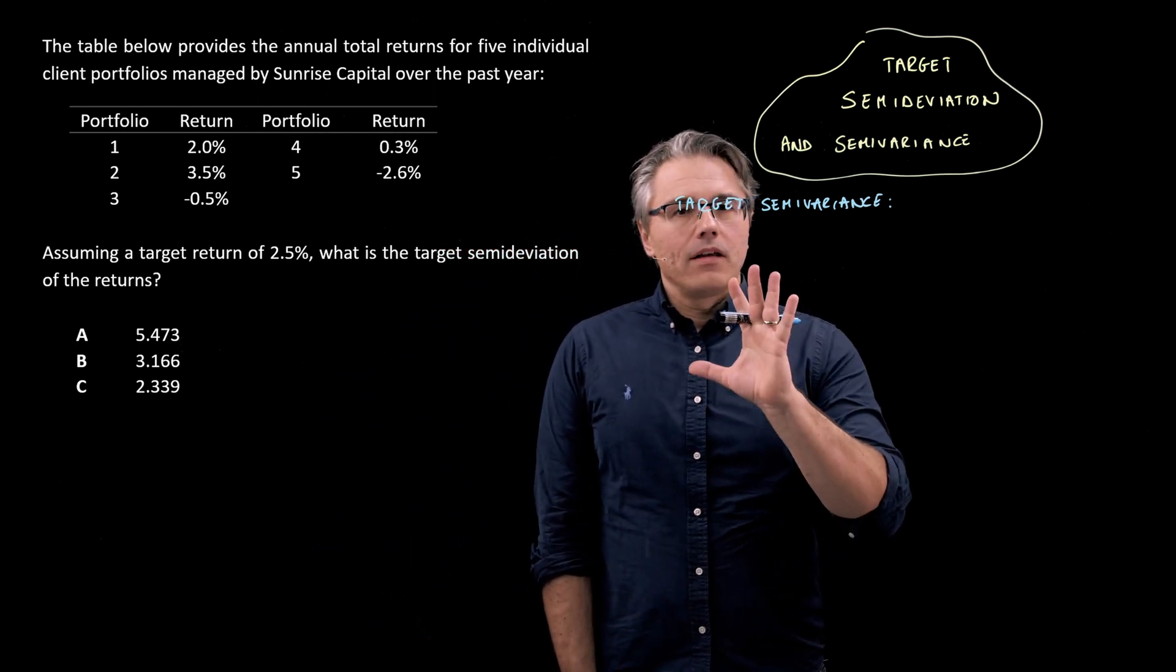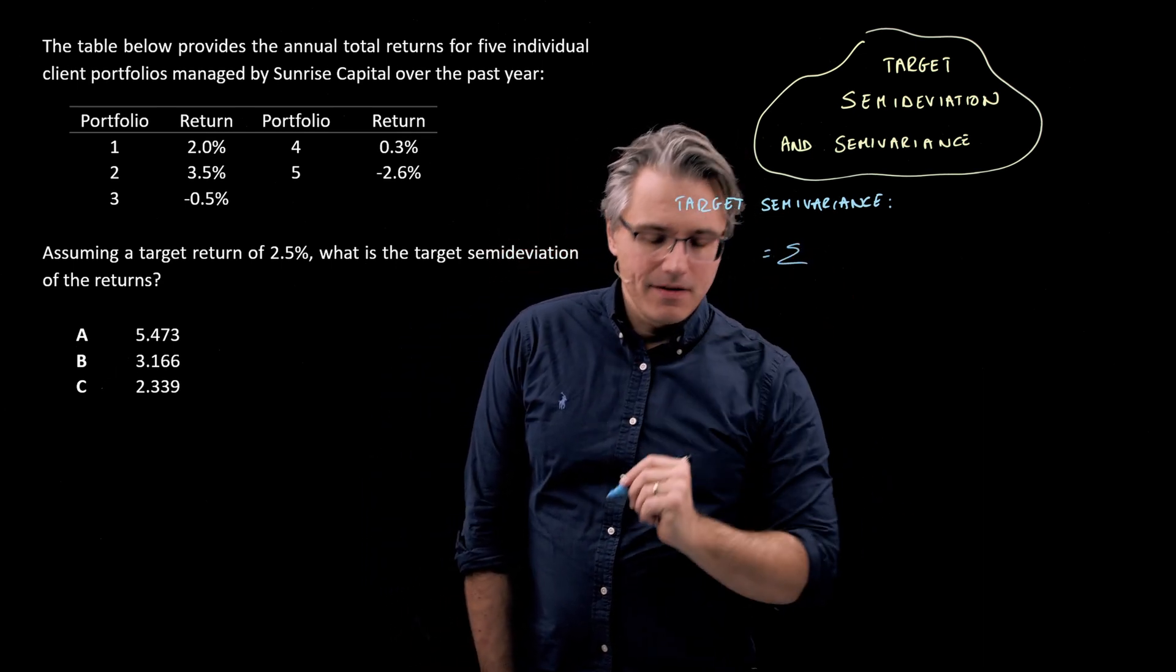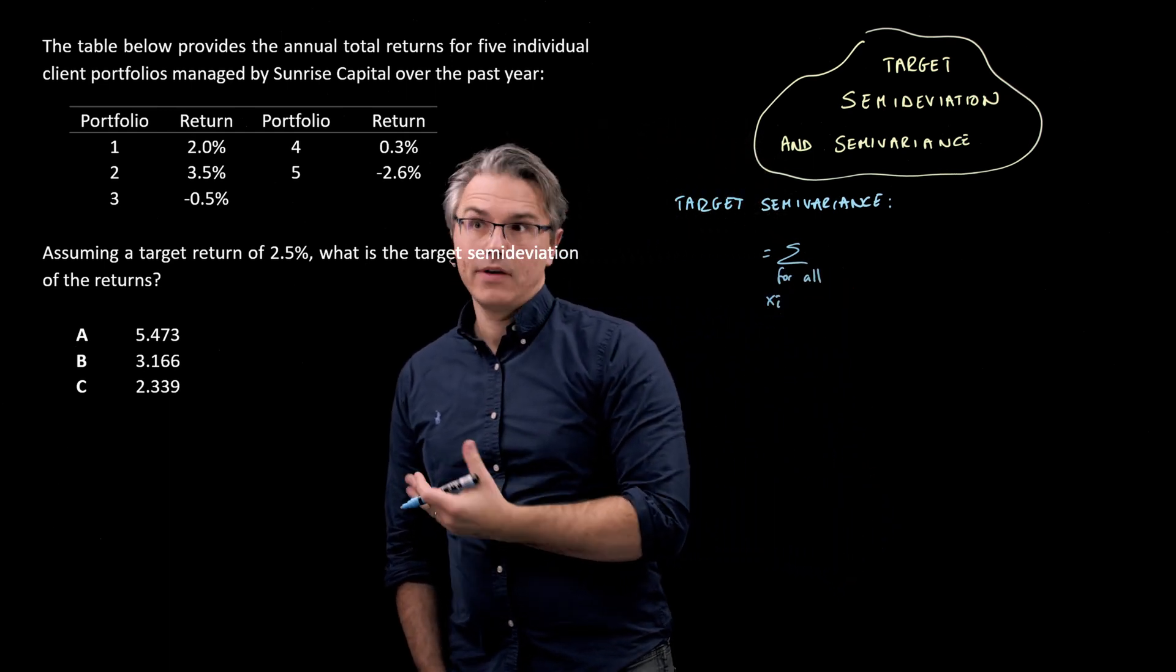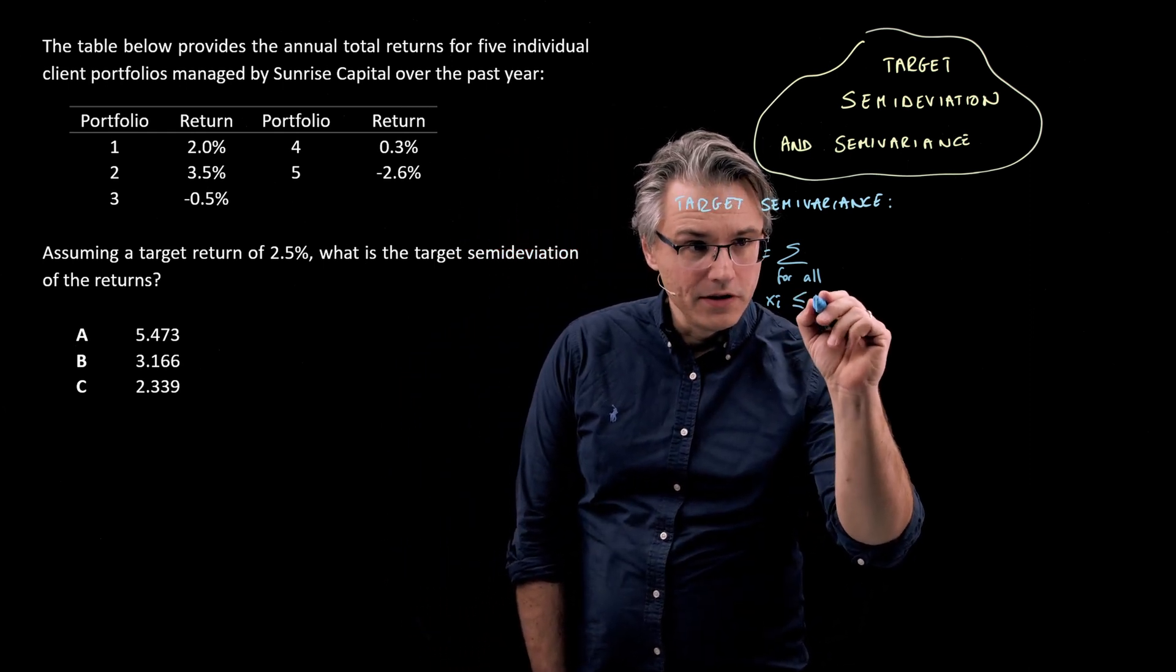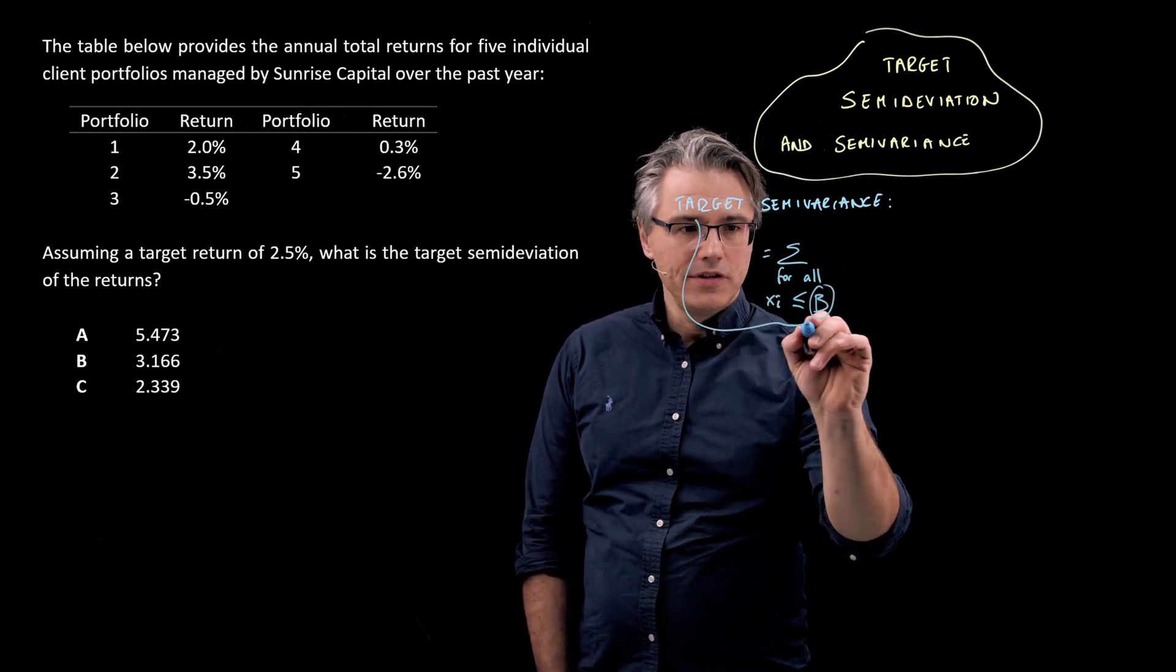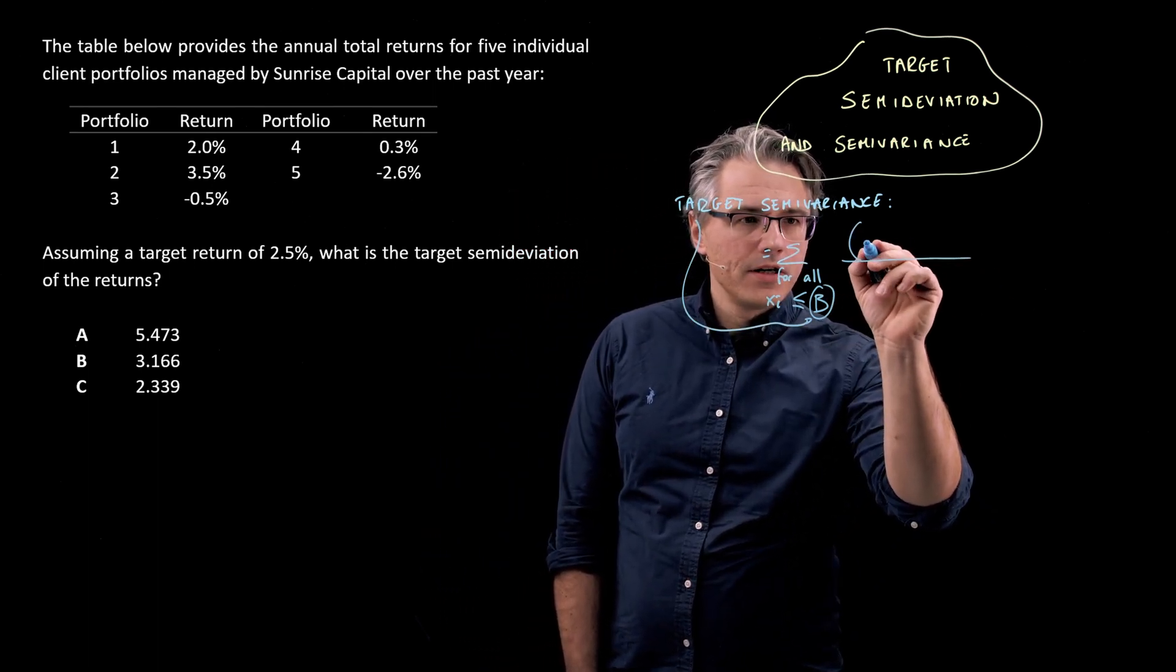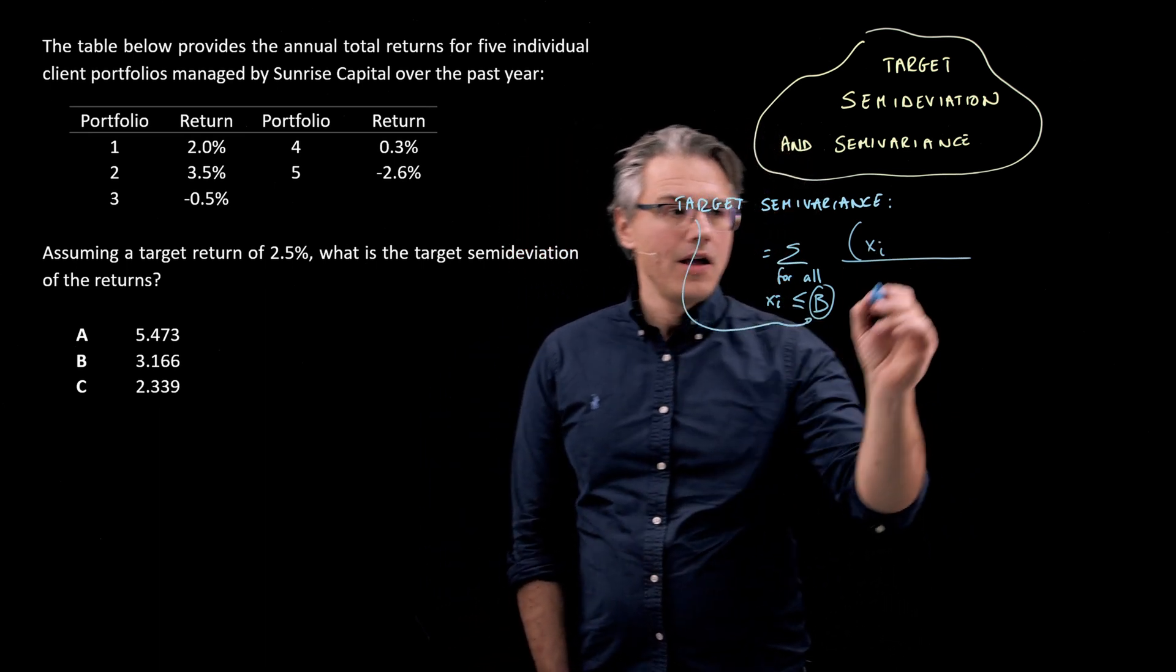Now the formula here is going to be that this is the sum for all observations, which we typically denote as xi, which are equal to or below a certain target. And we'll denote this as b.